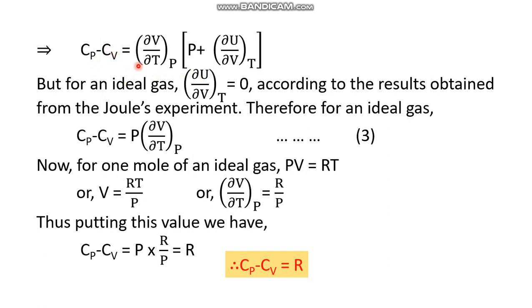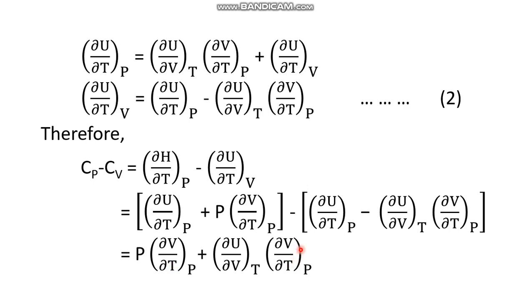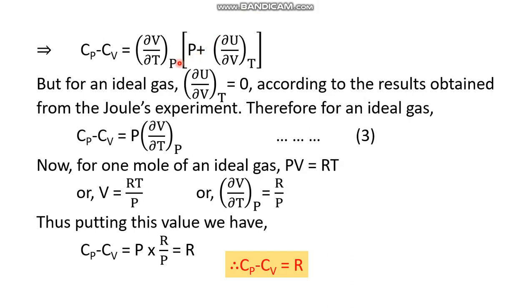If you are asked to prove that this difference is R, then you have to take the help of the ideal gas equation. Here Cp minus Cv has this expression—just take del V del T at constant P as common. Within the bracket what is left now is P plus del U del V at constant T. Now for ideal gas, this term is zero. Why? You have already obtained it from the last lecture, lecture number 12, the Joule's experiment. So this is only P times del V del T at constant P. This is equation three.